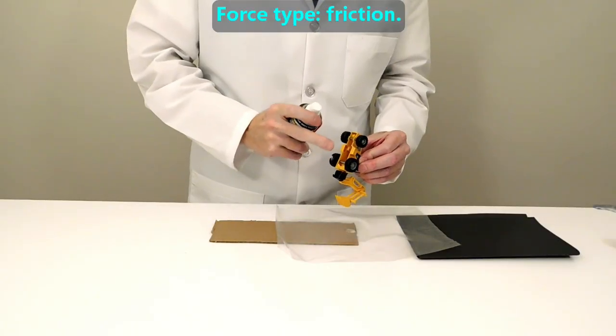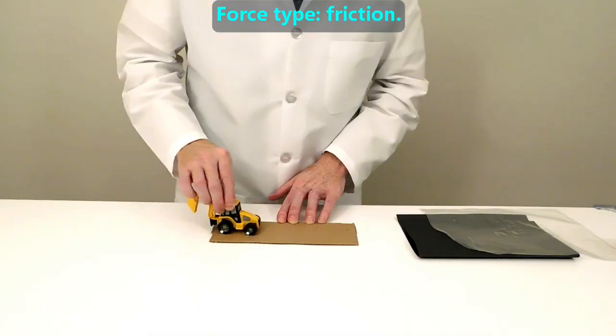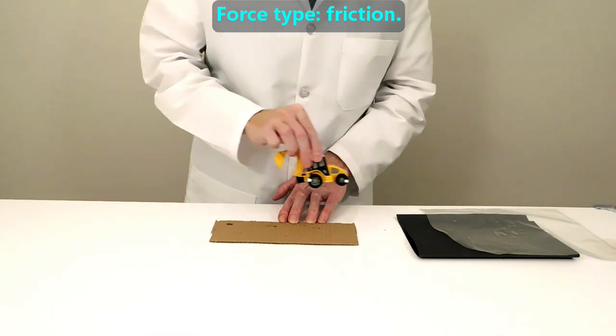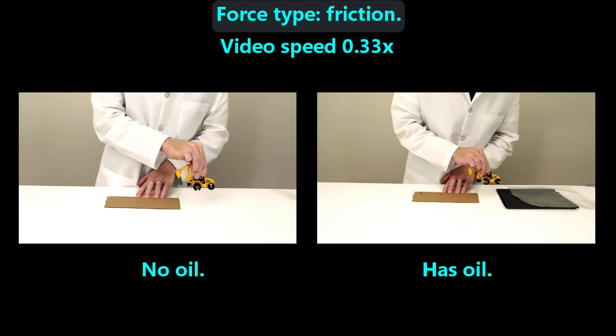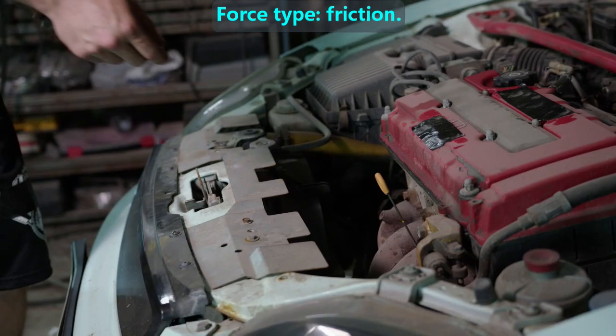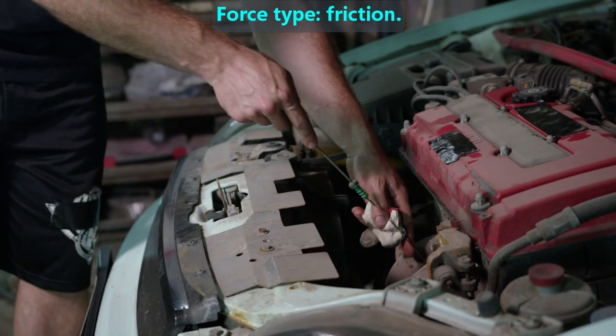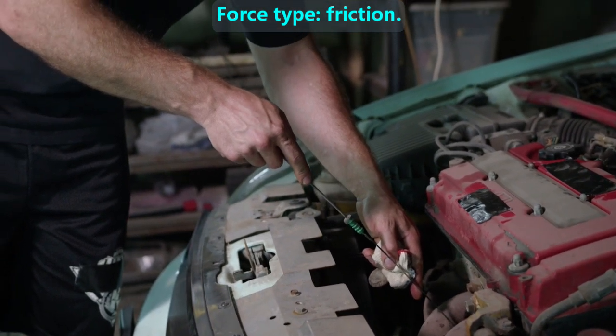We sprayed some oil on only the back axles and repeated the push test. The back wheels spin longer. This demonstrates that we can reduce friction by adding a slippery substance between the two objects that are sliding past each other. This is why we use grease in our car axles, and we put oil in our car engines so they also run with less friction.